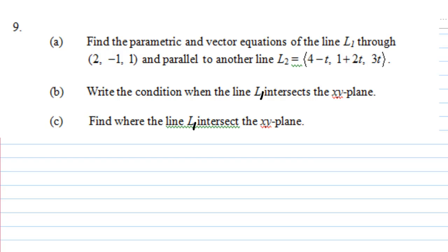For this recording, we are going to find the parametric and vector equation of a line L1 that passes through the point (2, -1, 1) and parallel to another line L2 given by (4-t, 1+2t, 3t).